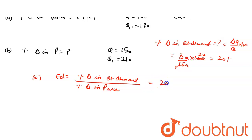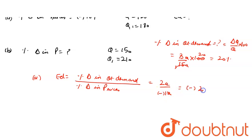So, percentage change in quantity demand is 20% and percentage change in price is minus 10. Zeros cancel, so elasticity of demand equals minus 2.